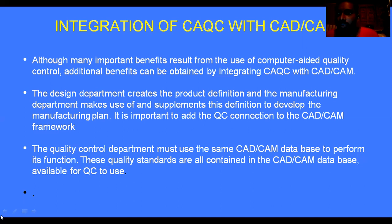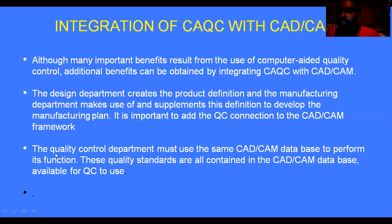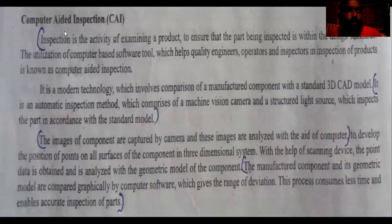There are many more benefits from integrating CIQC with CAD and CAM beyond the few points mentioned. These were our two topics for today. In quality control, testing and inspection are the major components. We discussed computer-aided testing and the integration of CIQC with CAD and CAM. We also have computer-aided inspection — CAI — and computer-aided testing — CAT.